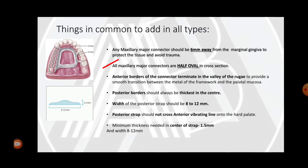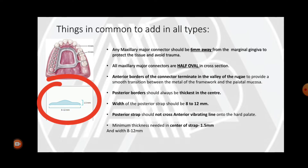The anterior borders of the connector should always terminate in the valley of the rugae or between two rugae and should never rest on mucosal folds. The posterior border should always be thickest in the center. The width of the posterior strap should be 8 to 12 mm, and the posterior strap should not cross the anterior vibrating line onto the hard palate, as this may cause gagging. Minimum thickness needed in the center of the strap is 1.5 mm.